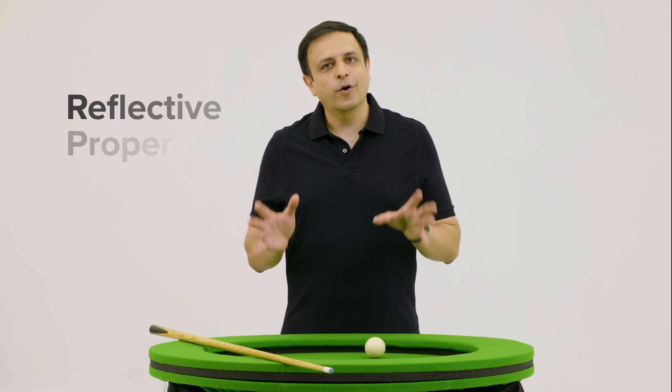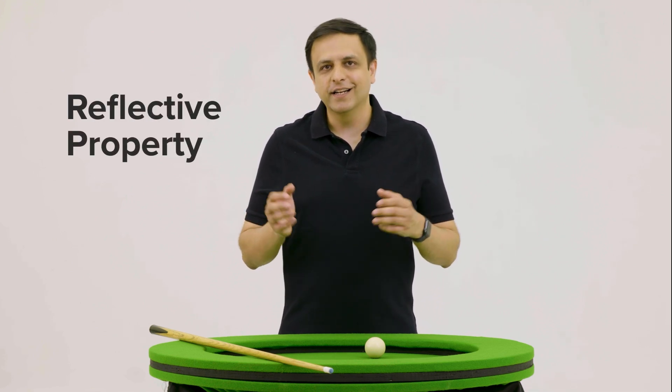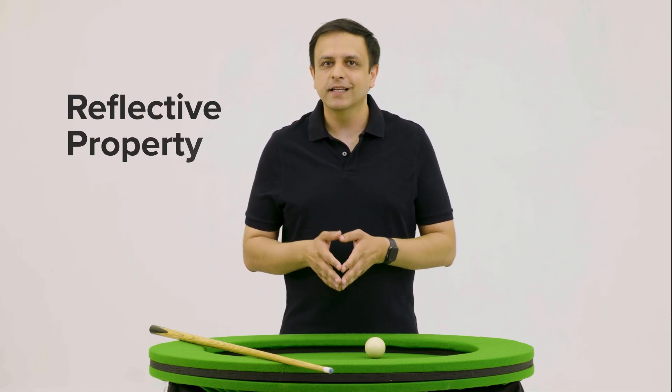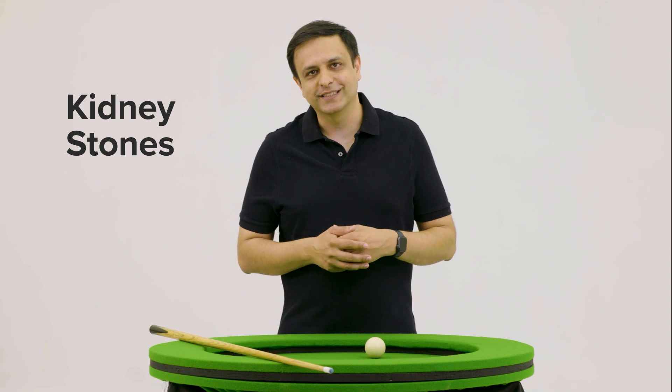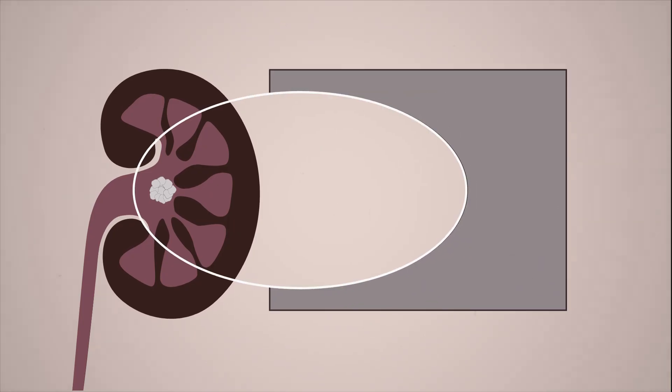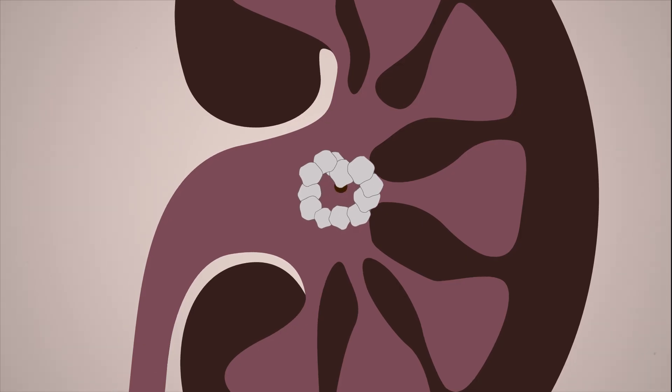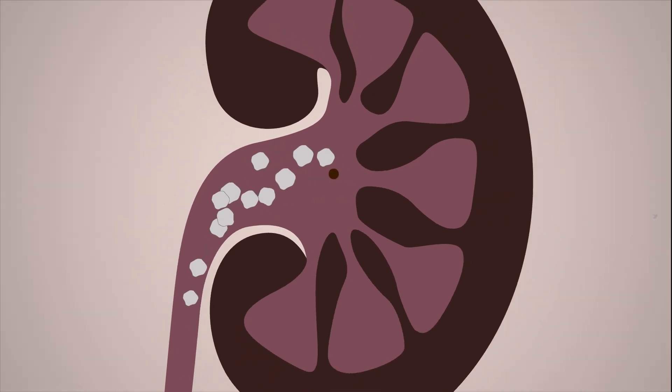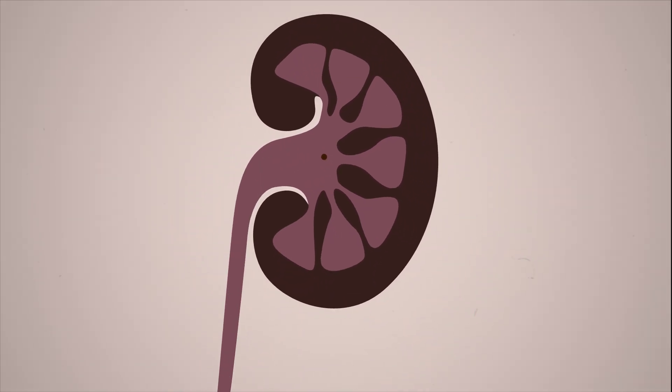Now this reflective property of an ellipse has practical uses too. In medicine, it is used to treat kidney stones. There's an elliptical chamber with a shockwave source at one focus and the kidney stones at the other. Shock waves emerging from the focus hit the ellipse, get reflected, and pass through the other focus, coinciding with the kidney stones. The stones are broken down into smaller pieces which can then be easily removed from the body.